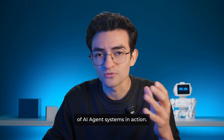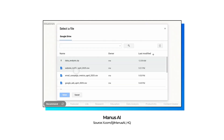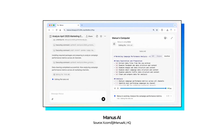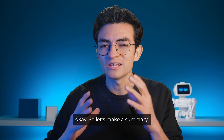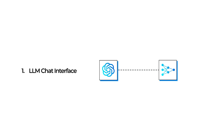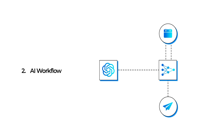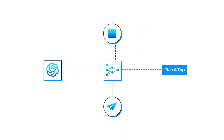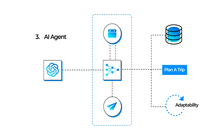We already have early examples of AI agent systems in action. Most of us have seen Manus, an AI agent from China that is performing several tasks by itself. So let's make a summary: ChatGPT is powered by a large language model — we can say it's a smart text and image generator. If we connect specific tools, we get an AI workflow. If we add goal setting, memory, tools manipulation, and adaptability, now we have an AI agent.